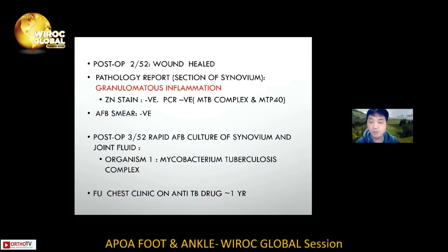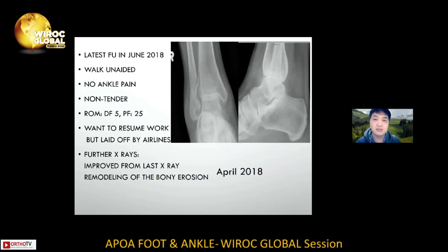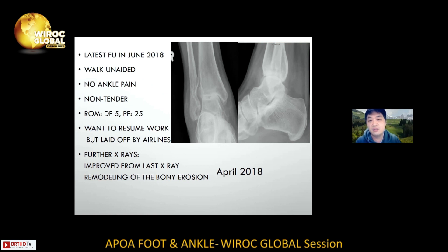So she actually suffered from TB of the ankle, and was treated with anti-TB treatment at our chest clinic for one year. A chest X-ray at that time showed no evidence of pulmonary TB. At her latest follow-up around two years post-operation, she was able to walk without an aid and had no ankle pain. The joints were no longer tender, but ankle range of motion was diminished. She wanted to resume her duty but was not cleared. She subsequently defaulted follow-up.